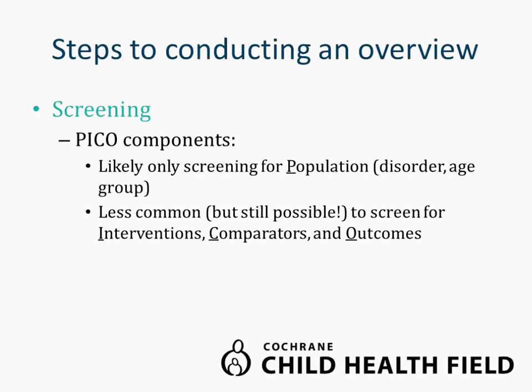If you're including non-Cochrane reviews, you'll need to determine which additional databases to search and experiment with different systematic review search filters to restrict your search to reviews only. Screening is also not as complex at the overview level because there are typically fewer reviews to screen, and you're typically only screening for the population — the right disorder, right age group, and any other population factors pre-specified as important. It's less common to screen for interventions, comparators, and outcomes, because overviews are normally looking at multiple interventions for one condition, so we want to be more inclusive.